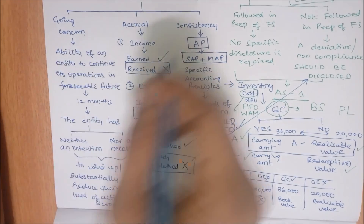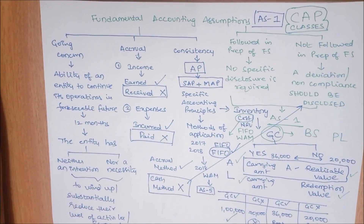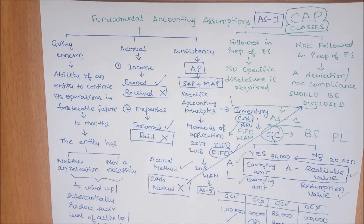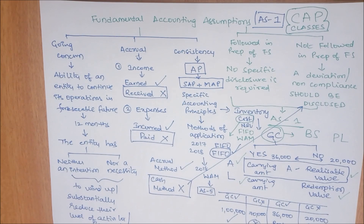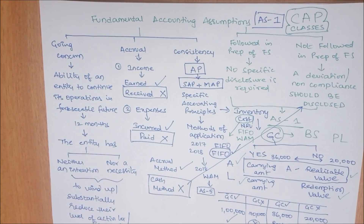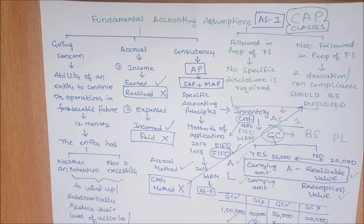So my dear friends, we have discussed Accounting Standard 1 — Disclosure of Accounting Policies — completely in detail. The three fundamental accounting assumptions are: going concern (the ability of an entity to continue its operations in the foreseeable future); accrual (recording income when earned, not when received; recording expenses when incurred, not when paid); and consistency (applying the same accounting policies from one period to another). If fundamental accounting assumptions are followed, no specific disclosure is required. If not followed, the deviation should be disclosed in notes to accounts. Thank you.